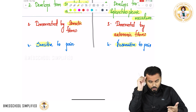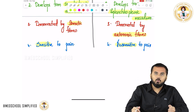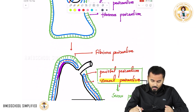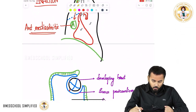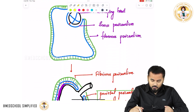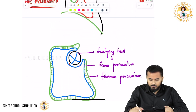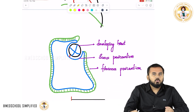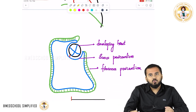These are the important things you need to know regarding the parietal and visceral pericardium — their adherence, embryological origin, innervation, and pain sensitivity. Thank you so much for watching. Goodbye.